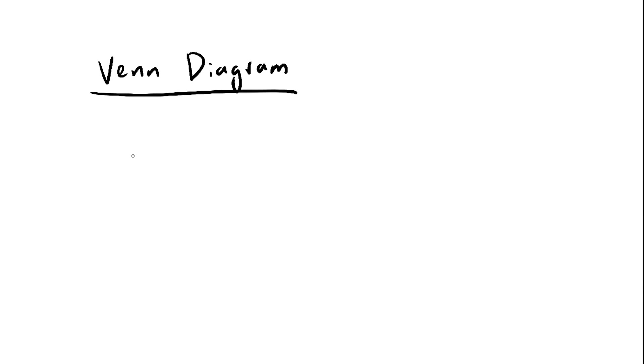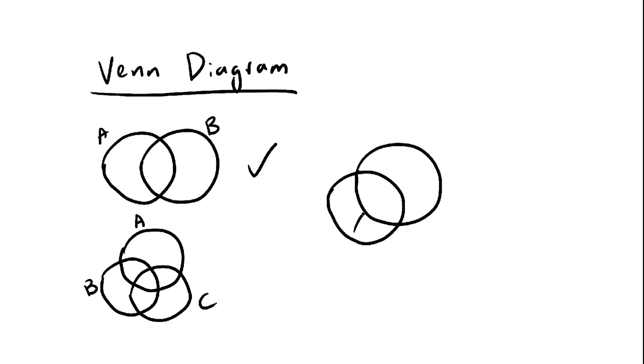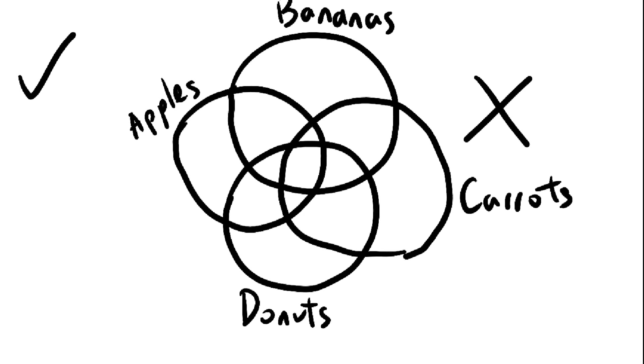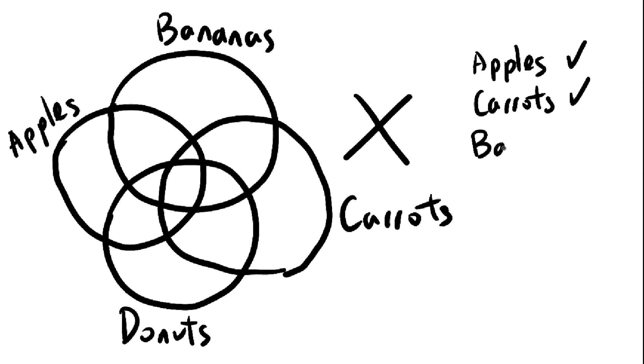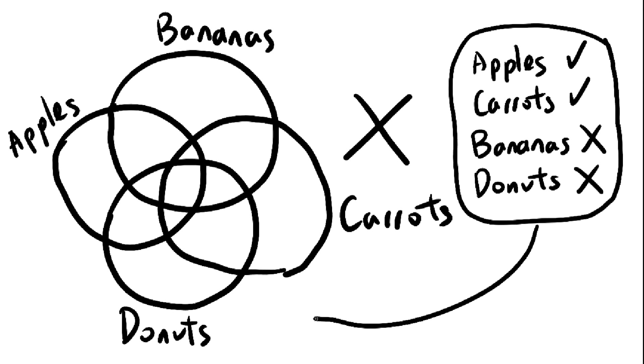What exactly is a Venn diagram? This is a Venn diagram, this is a Venn diagram, but this is not a Venn diagram. The reason is, if someone likes apples and carrots but not bananas or donuts, there's no place anywhere here to put them in.